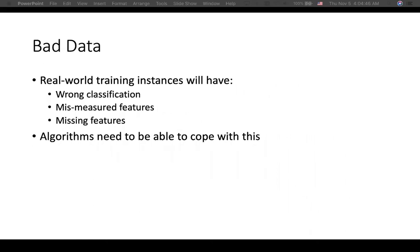Now let's talk about bad data. Real-world training instances will have wrong classification, mis-measured features, missing features, errors, some data being missed, or even wrong labels. There are so many missing things in real-world data that may impact your learner. And the other problem is that algorithms need to be able to cope with all of these problems.